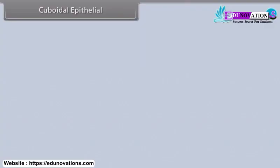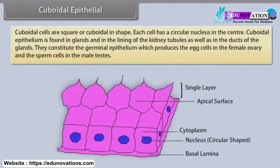Cuboidal epithelial cells are square or cuboidal in shape, and each cell has a circular nucleus in the center. Cuboidal epithelium is found in glands and in the lining of the kidney tubules, as well as in the ducts of the glands. They constitute the germinal epithelium, which produces the egg cells in the female ovary and the sperm cells in the male testes.